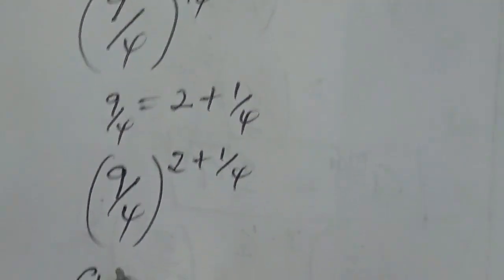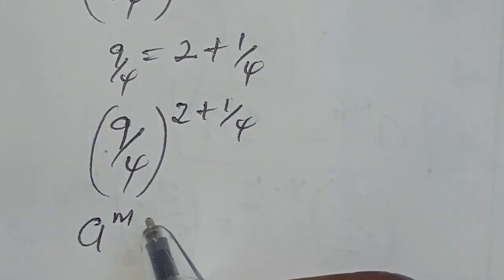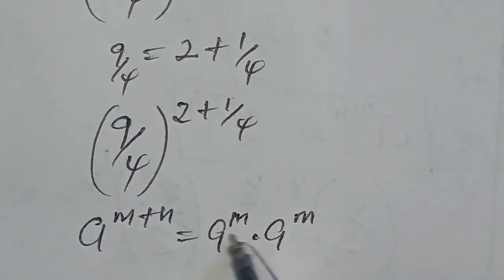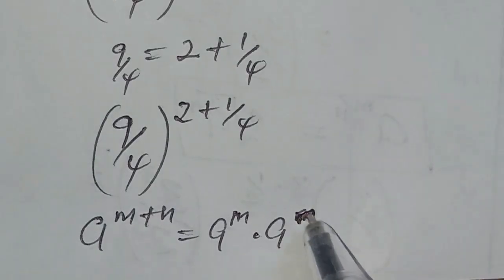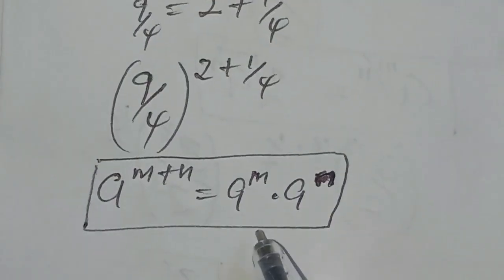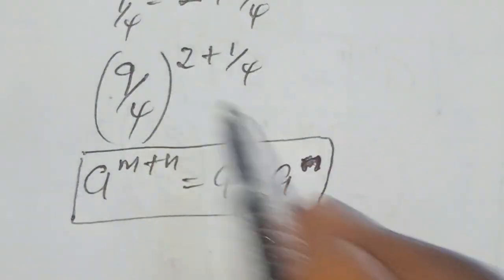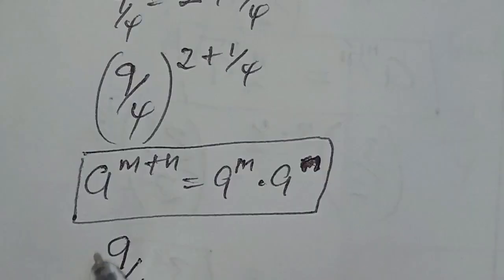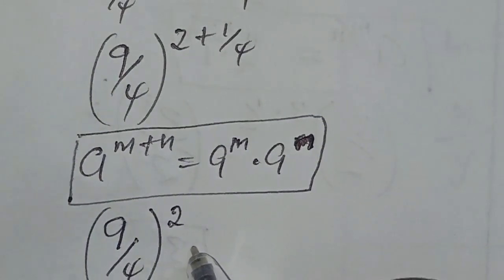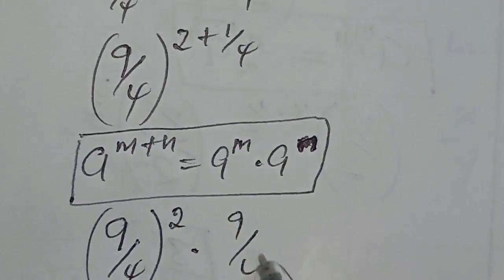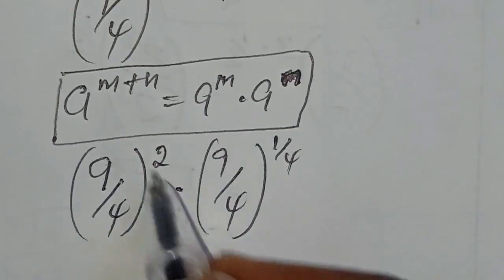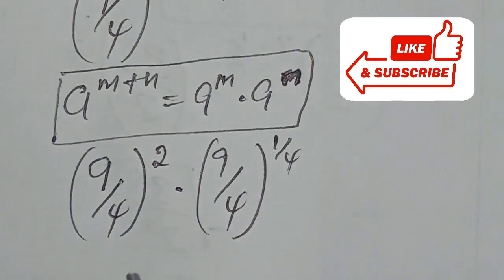We now consider this identity: base a to the power of m plus n equals base a to the power of m multiplied by base a to the power of n. Using this identity, we get (9/4) to the power of 2, multiplied by (9/4) to the power of 1 over 4.